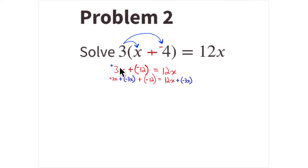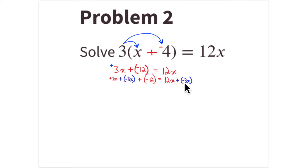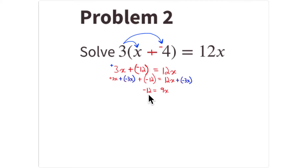Get rid of the positive 3x on the left side by adding -3x. This leaves positive x's on the right side. Add -3x: it cancels the +3x, and 12x plus -3x gives 9x. So 12 + (-3) = 9x, and you're left with 9x = -12.